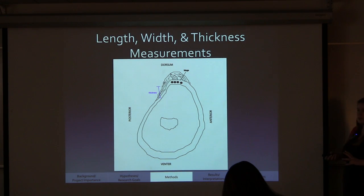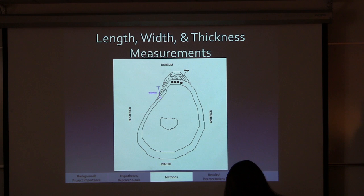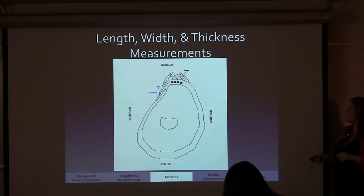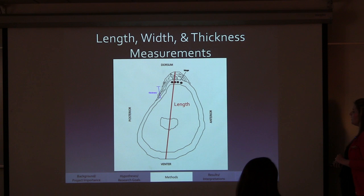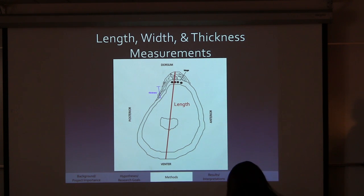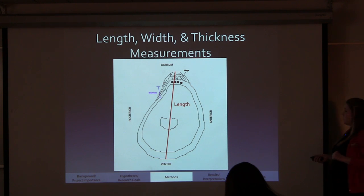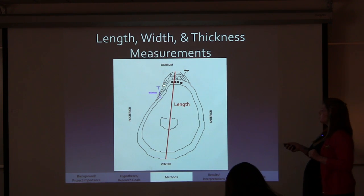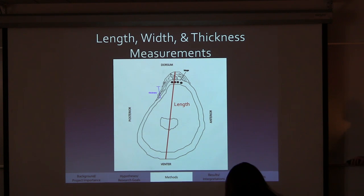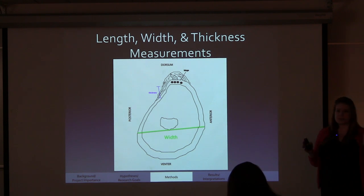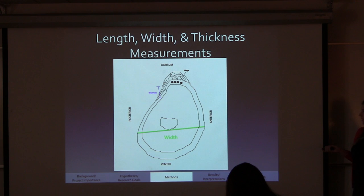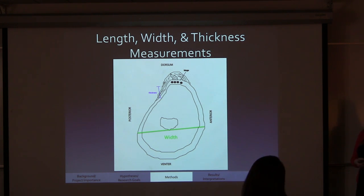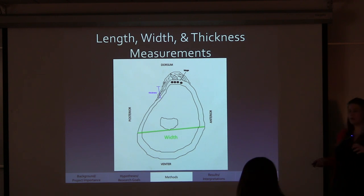We also took measurements to look at how size changes through time. All measurements were taken from the same location on each oyster shell: length measurements were taken venter to dorsum (top to bottom), thickness from the base of the hinge structure to the top of the thickest part of the hinge, and width from posterior to anterior side. When specific parts were broken and couldn't be measured accurately, they were excluded.